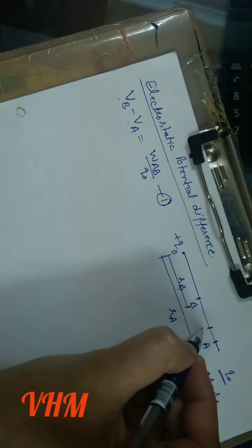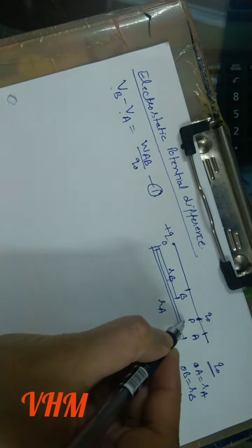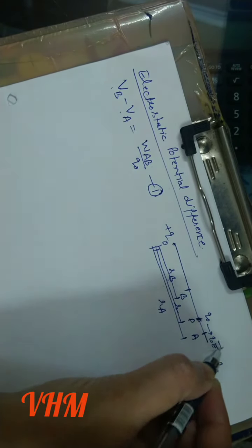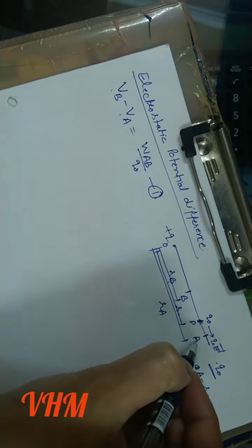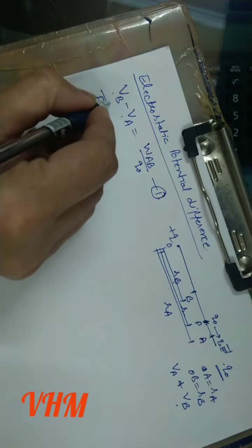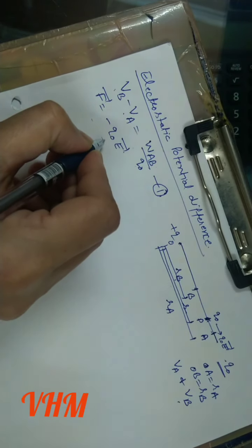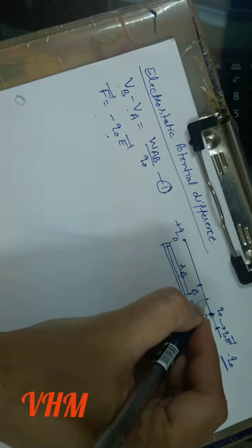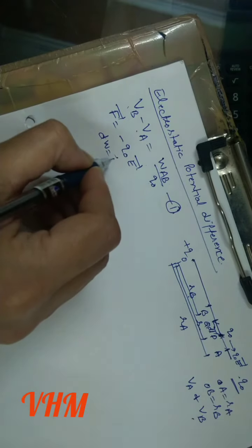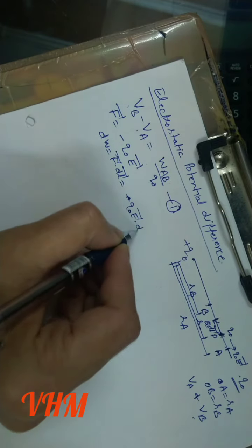During motion, let the test charge is at point P, moving from A to B, and this distance is R. This test charge experiences the force Q₀E vector along the direction of electric field. But we have to move the charge from A to B, so an external force required is at least equal to minus Q₀E vector. For small displacement PQ, DL vector, the small work done is F dot DL vector, which is minus Q₀E dot DL vector.